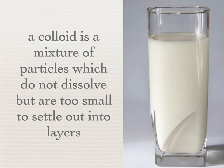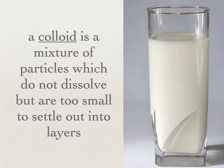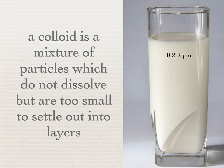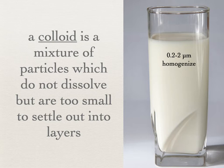Colloids have slightly larger particles that technically do not dissolve, but they're too small for gravity to settle them out of the liquid mixture. Think about milk — it has two basic parts: a water-based part and a fat part. In a typical glass of milk, the milk fat particles are somewhere between 0.2 and 2 micrometers. A micrometer is about a millionth of a meter, so we're talking about a pretty small particle size. Those fat particles are not big enough to settle out, so they disperse throughout the liquid. The process of breaking those fat particles into small enough pieces is called homogenization. Whether colloids are heterogeneous or homogeneous is a bit up for discussion.